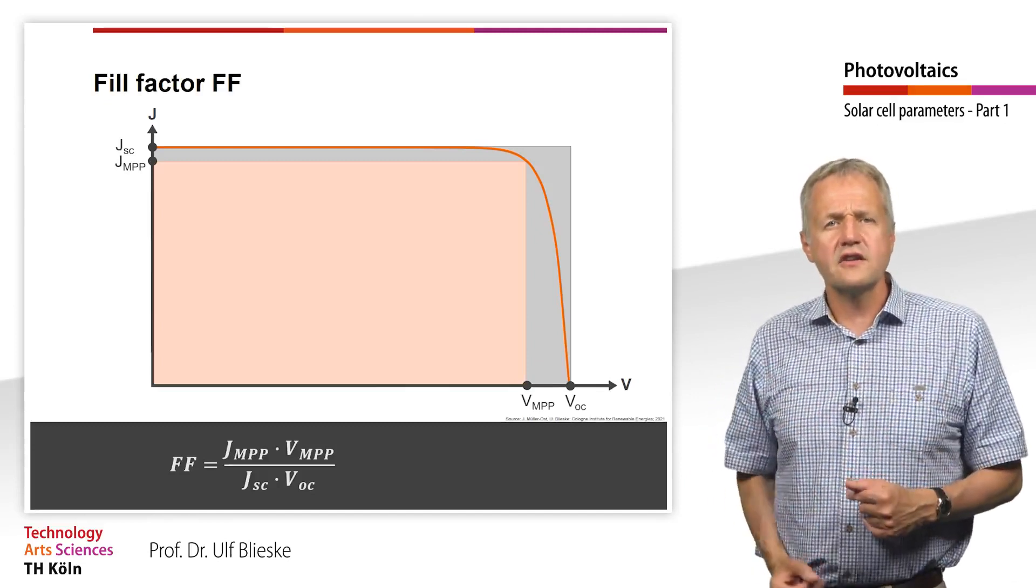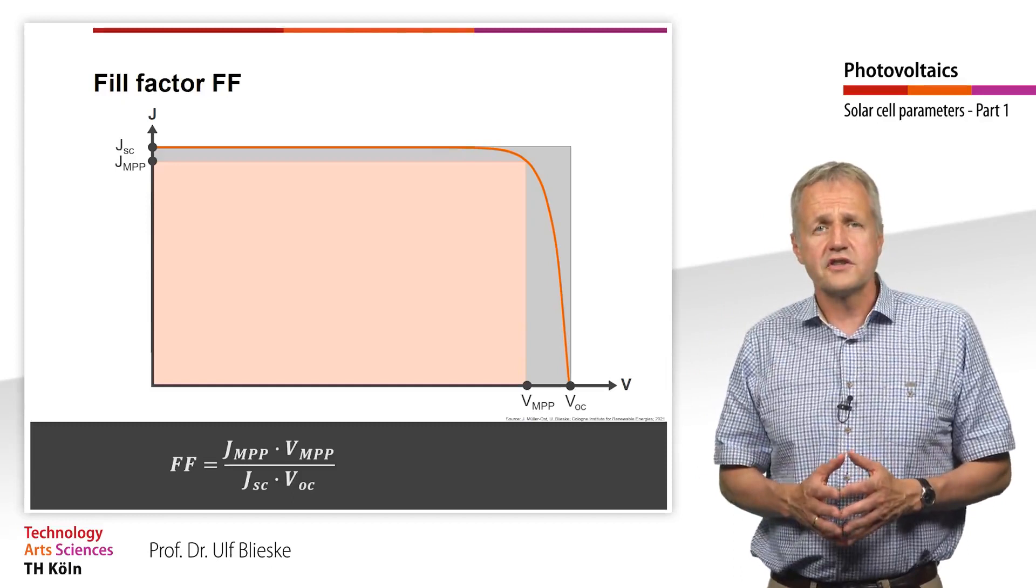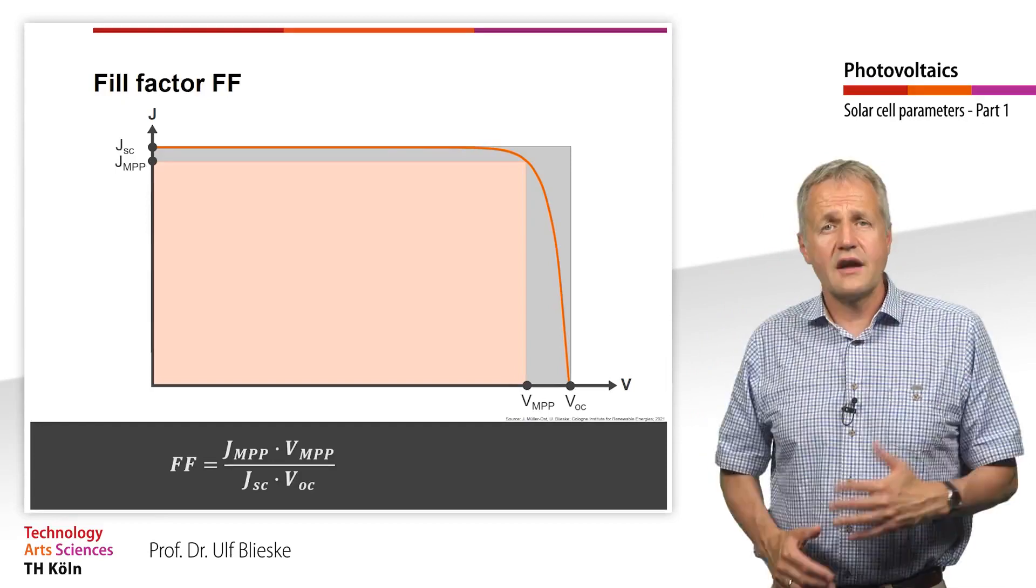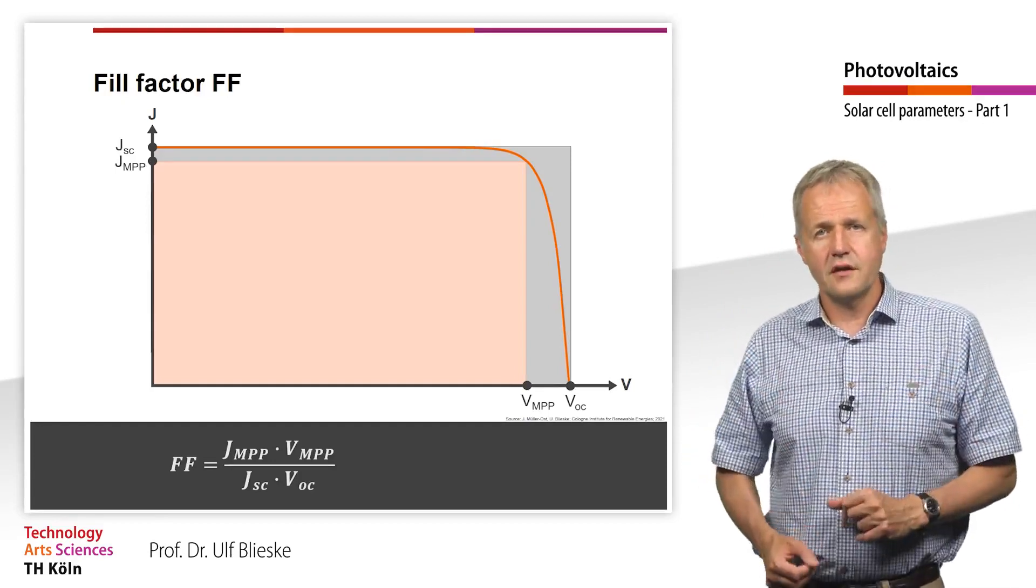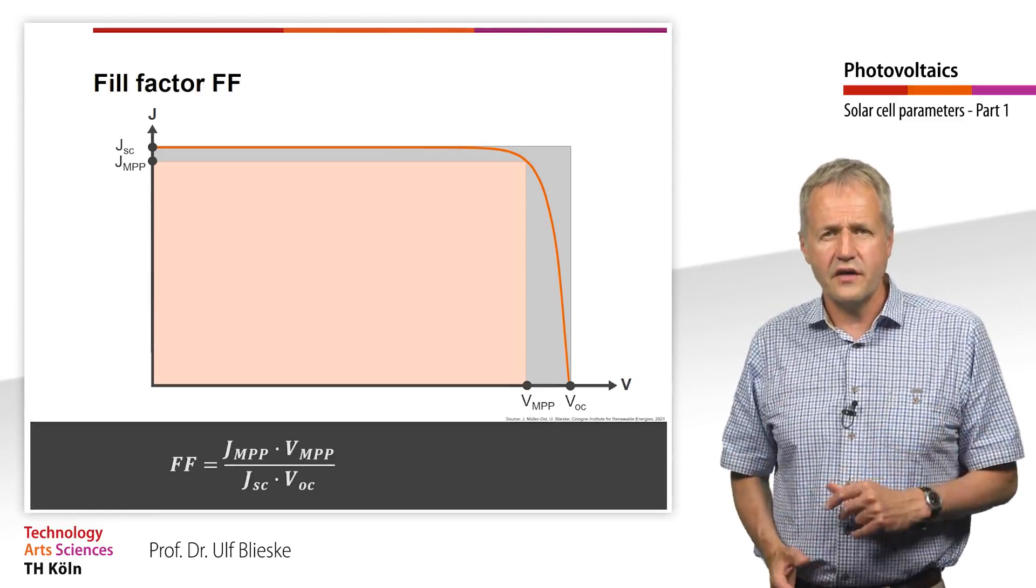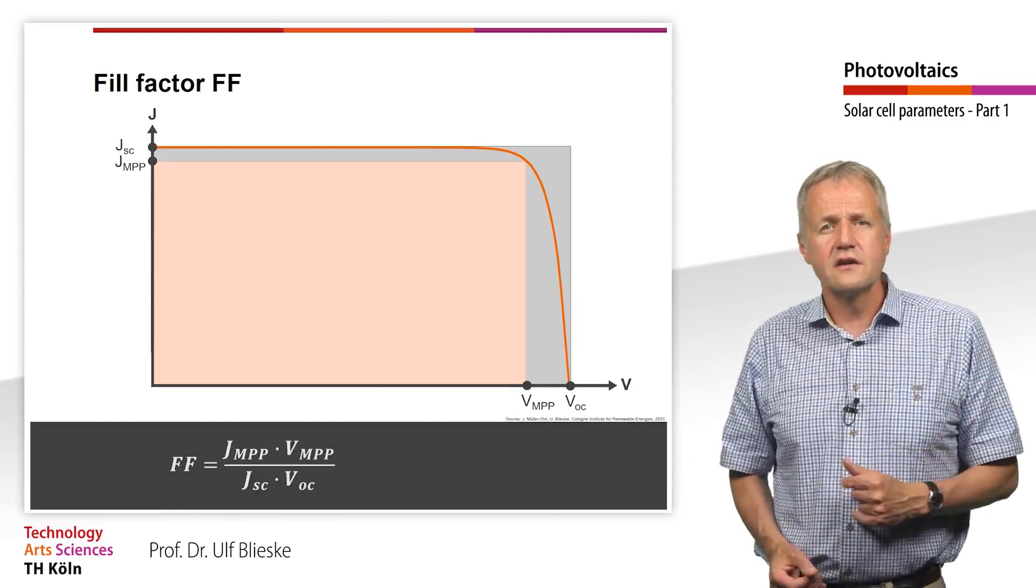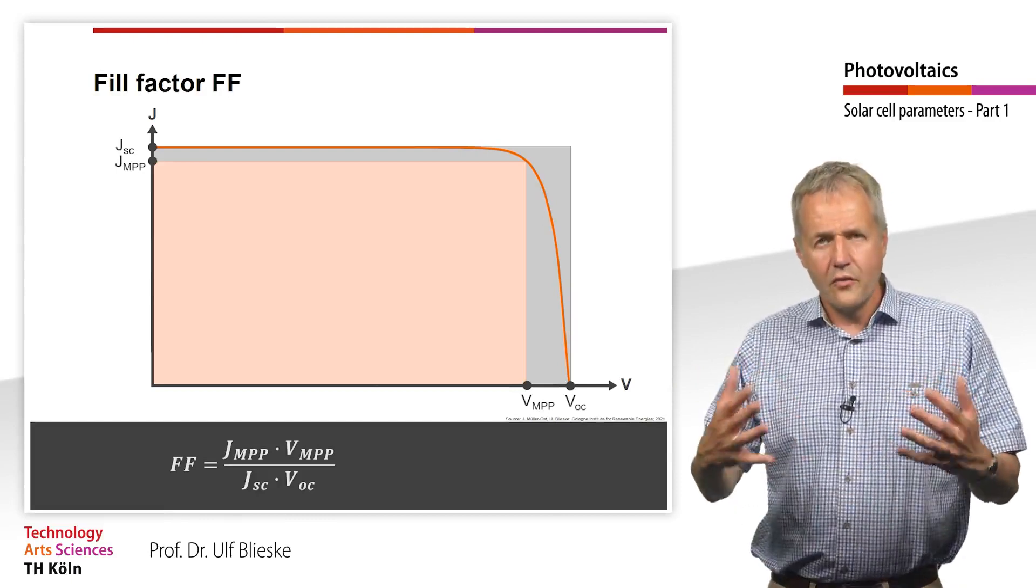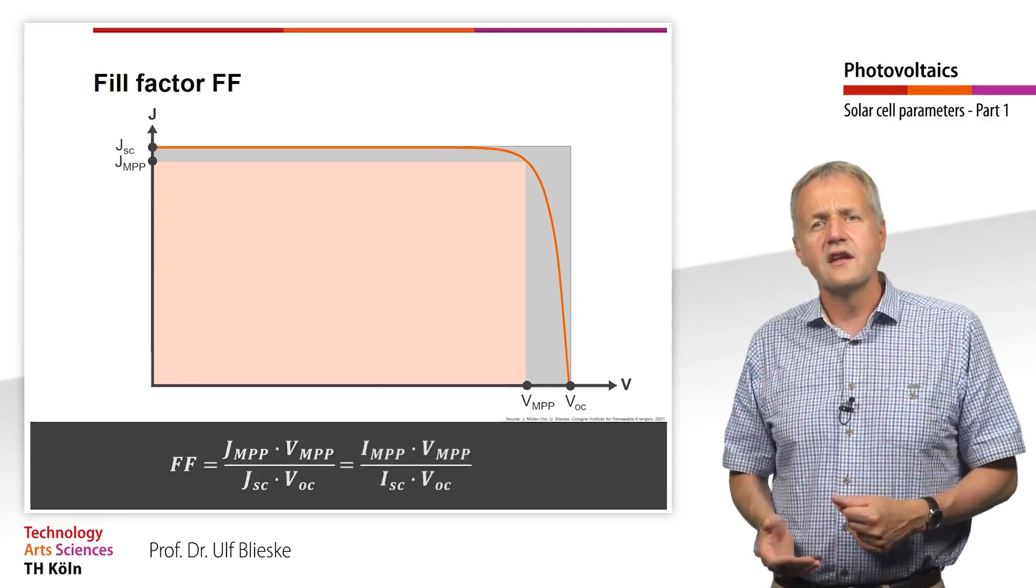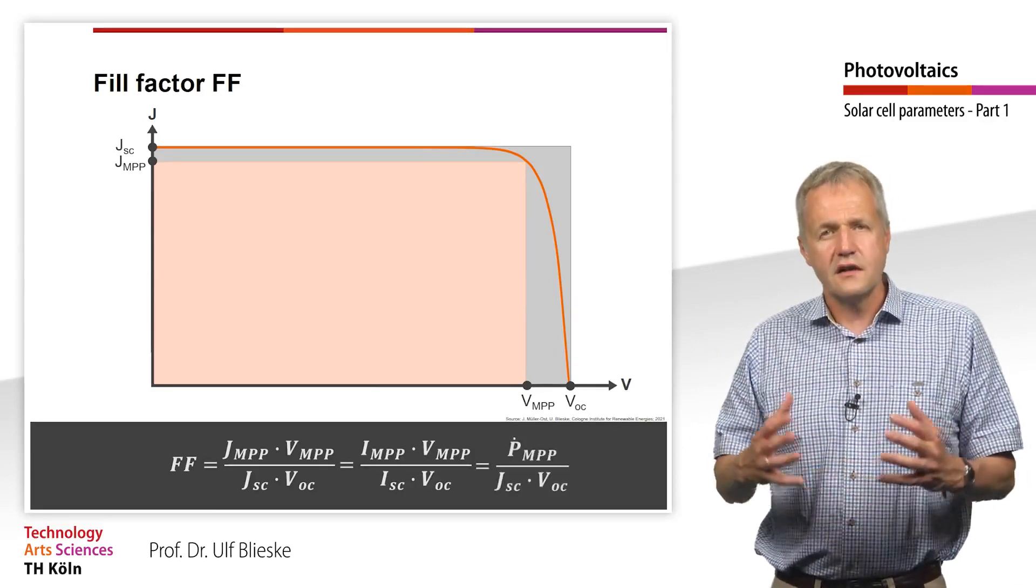With a high fill factor, the J-V curve drops steeply just before the open circuit voltage is reached, while the drop starts earlier with a low fill factor. The fill factor therefore is a measure of the quality of a solar cell. Typical values for good crystalline silicon solar cells are in the range from 75 to 85%. Since the current densities are in the numerator and denominator of the fill factor, it can also be calculated using the currents instead of the current density or also with the power density in the MPP.